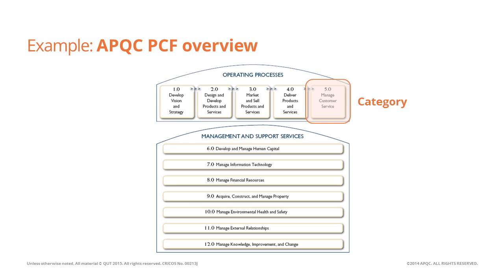There are also seven additional categories that group processes related to management and support services — essentially grouping management and support processes — such as develop and manage human capital, manage information technology, or manage financial resources.